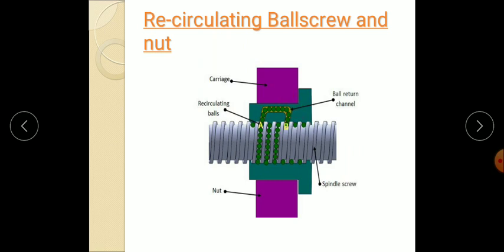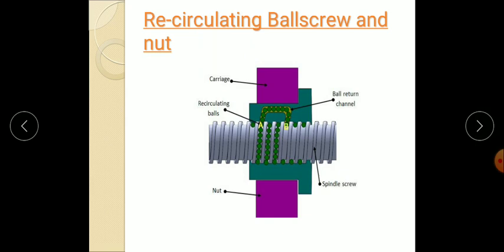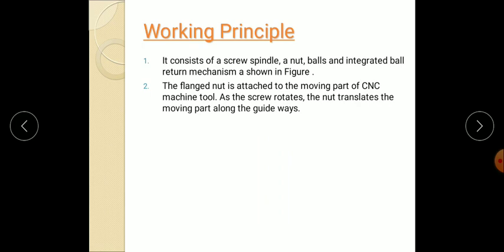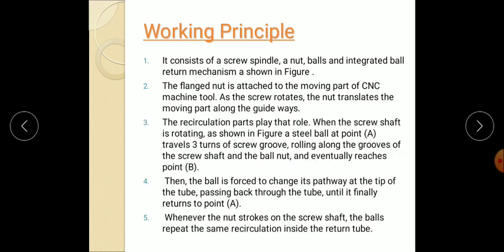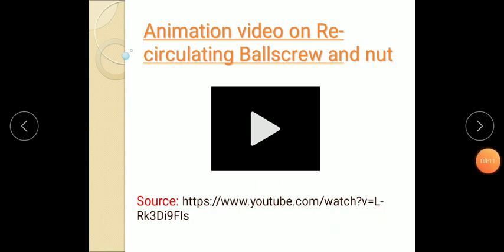Then the ball is forced to change its pathway at the tip of a tube, passing through the tube until it finally returns to A. Whenever the nut strokes on the screw shaft, the ball repeats the same recirculation inside the return tube. This is the working principle. Next let me show the animation video on recirculating ball screw and the nut.